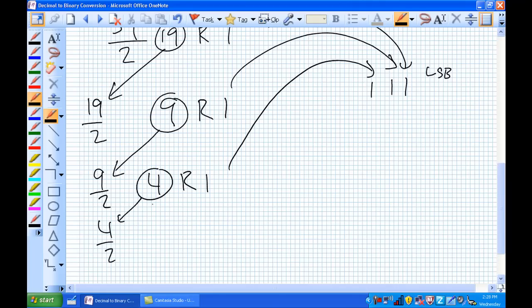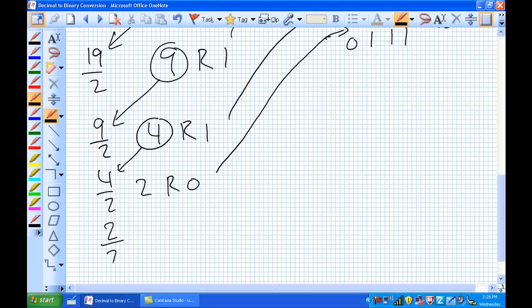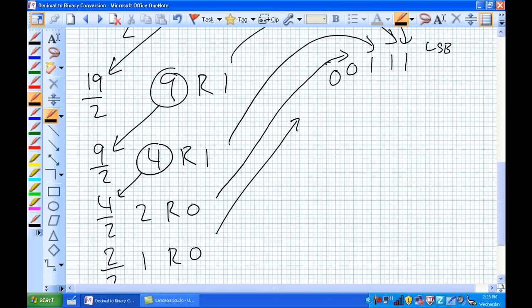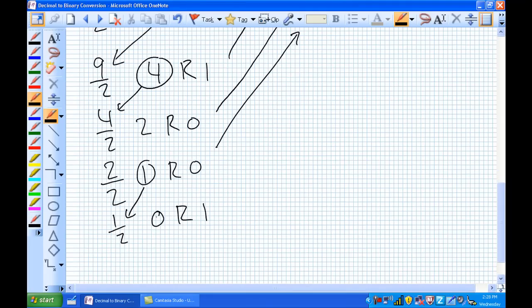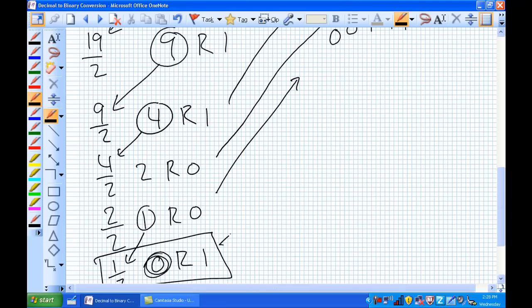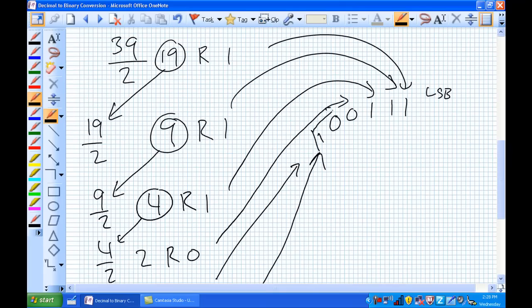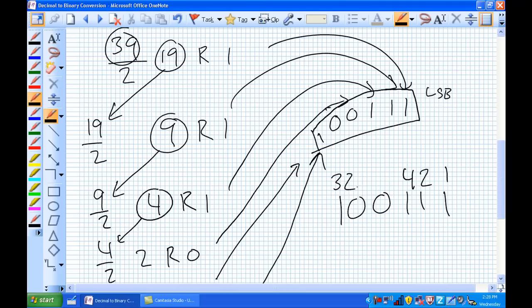Take the answer, put it down here. 9 divided by 2 goes 4, remainder 1. 4 divided by 2 goes in 2 times with a remainder of 0. 2 divided by 2 goes in 1 time with a remainder of 0. 1 divided by 2 goes in 0 times, remainder 1. This 0 right here is critical. That means stop doing what you're doing because you've reached the MSB, which is a 1. If we've done this correctly, 100111 should be 39. Is that true? 1, 2, and a 4. There's no 8s, no 16s, but there is a 32. 32 plus 4 plus 2 plus 1 is 39. We have done it correctly.